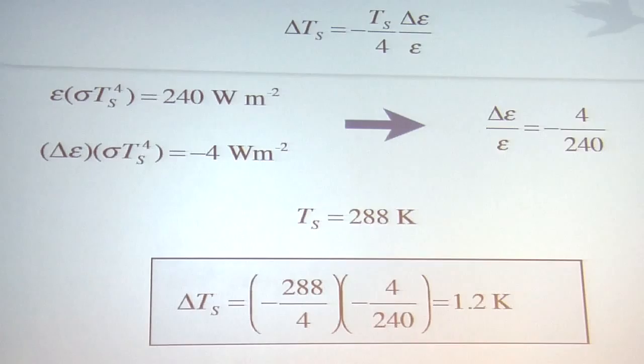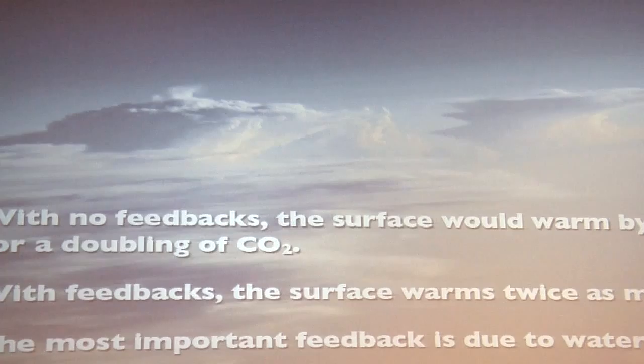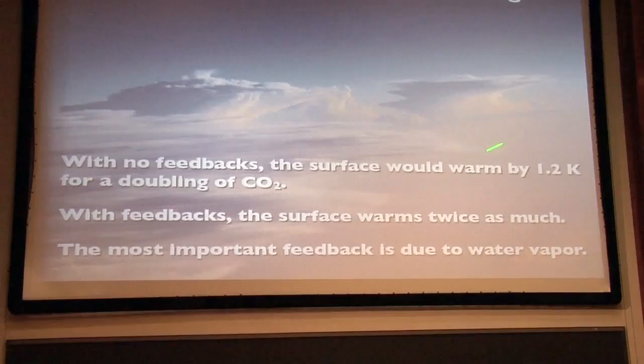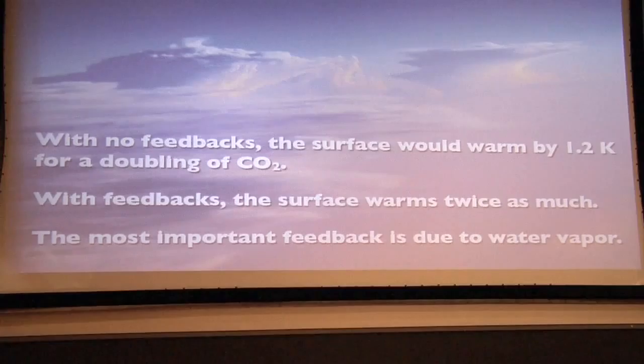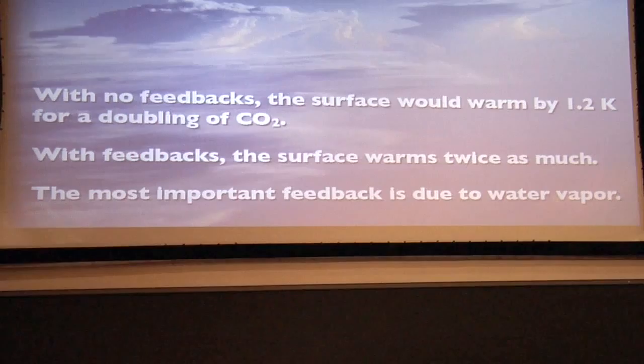So, plug in the numbers, 1.2 Kelvin. Now, if you write small, you can fit this slide in the one before on the back of a business card. Okay. This is not complicated. One of the most important points to make is that the change in the emissivity that I put in, the perturbation of the radiation budget, is about 2%. 4 watts per square meter out of 240. The change in the temperature is about half a percent. 1.2 out of 288. There's nothing crazy about that. 2% change in the radiation budget, half a percent change in the temperature. It would be surprising if you change the radiation budget by 2% and you didn't get something.